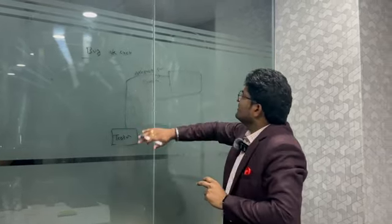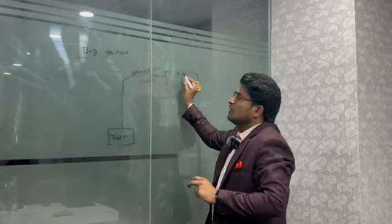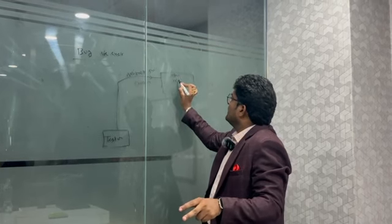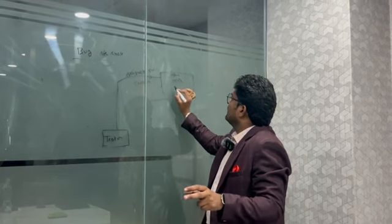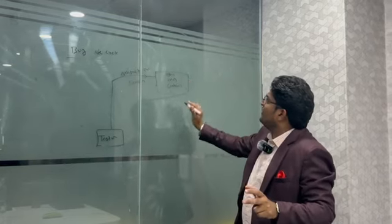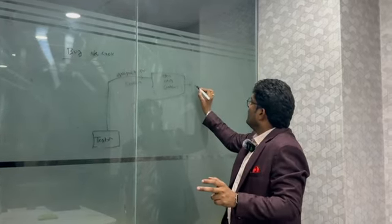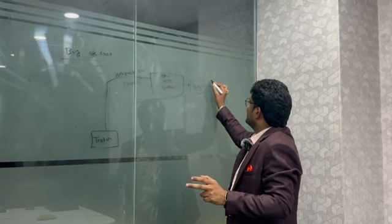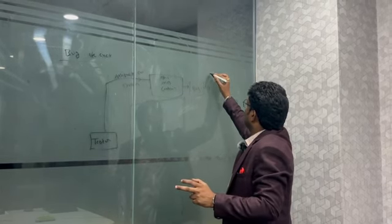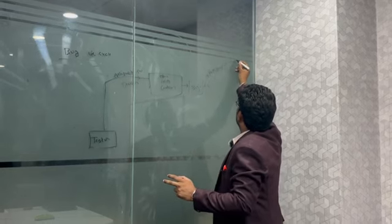Once we assign to the developer, the developer will open the defect and verify it, and confirm it. After confirmation of the defect, then we can call it as a bug. This bug is then assigned to the developer.